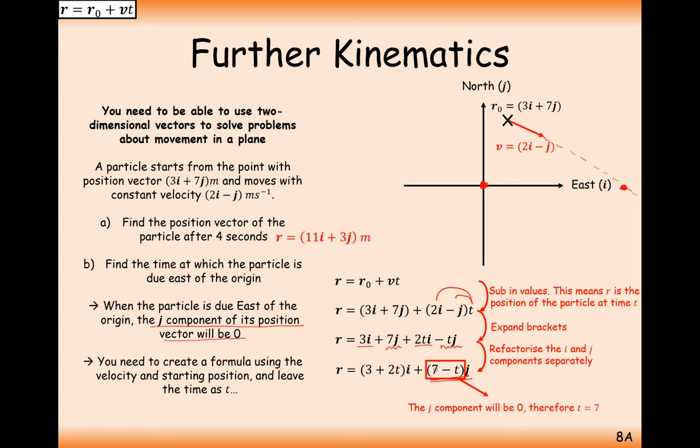If the question asked for due north or south of (0, 0), you would set the i component equal to zero, because from the origin you don't need to move left or right, just up or down. In that case, 3 + 2t = 0 would give t = −3/2, which doesn't make sense as you can't go back in time.